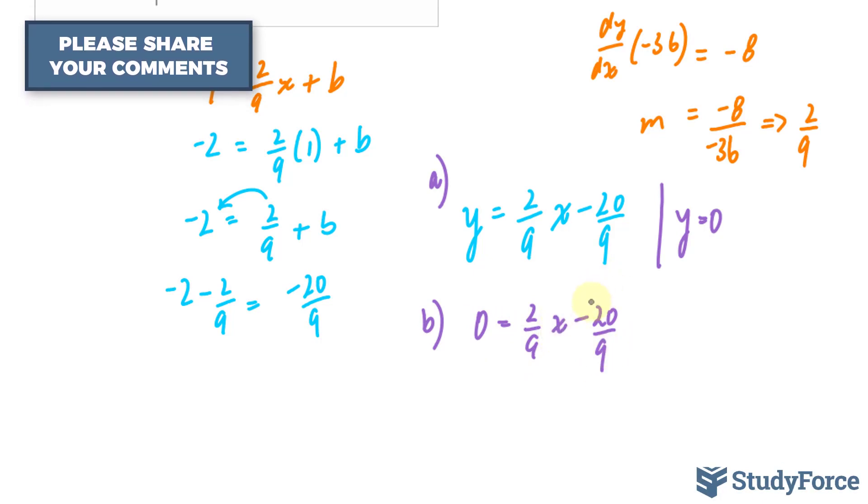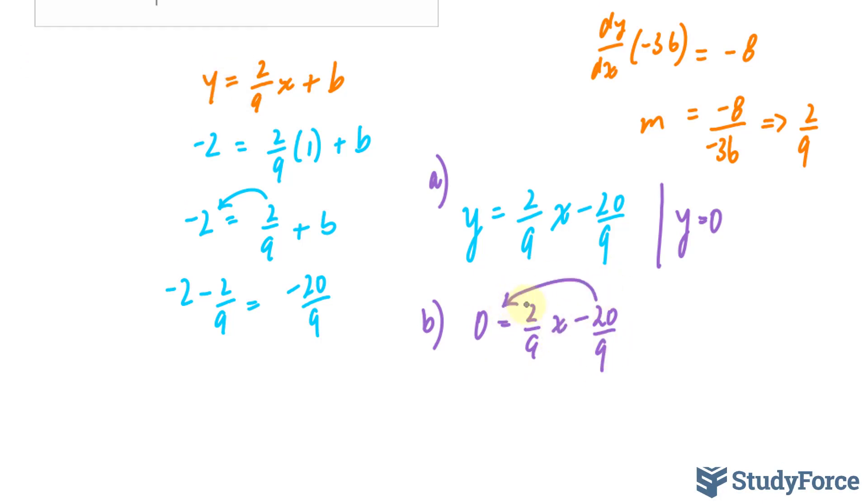I'm solving for x. I bring that over. 20 over 9 is equal to 2 over 9x. The 9s go away, leaving us with x is equal to 10. Therefore, my x-intercept occurs at 10 and 0.